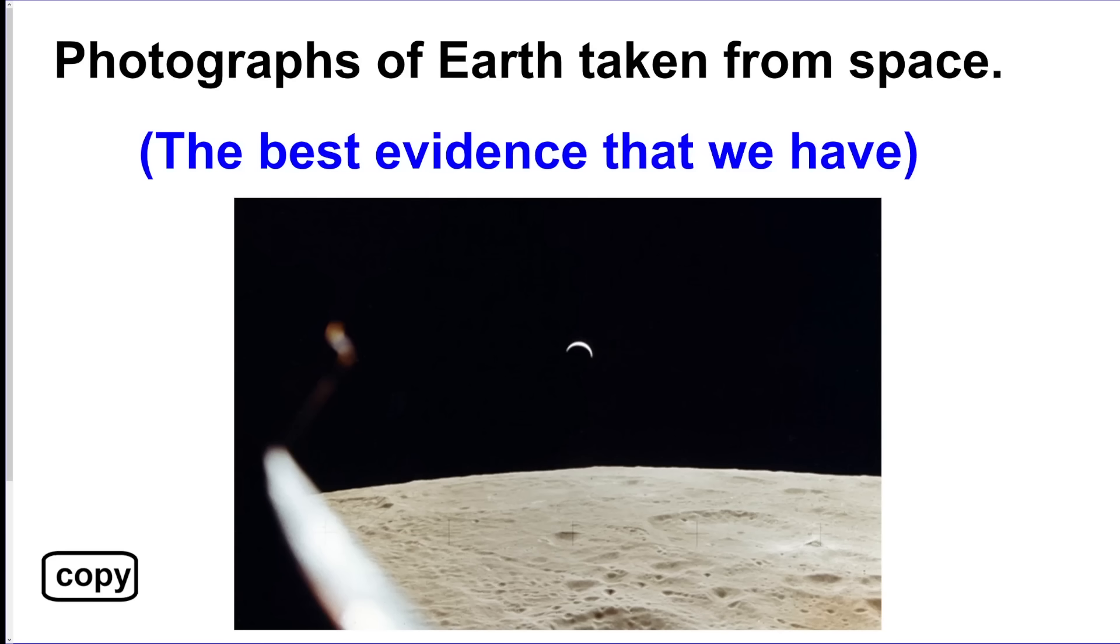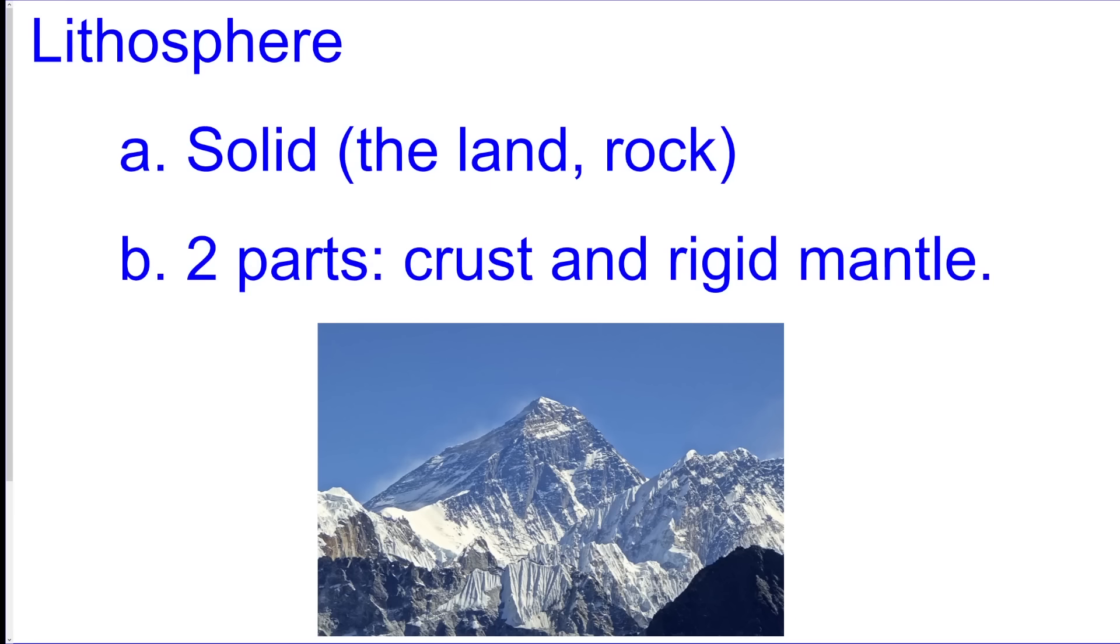The best evidence we have that the Earth is spherical in shape, should I say oblate spheroid in shape, is photos from space. We can clearly see it. We got the lithosphere. The lithosphere is all of the solid material on the planet, so that's going to be all the land, all the rock.